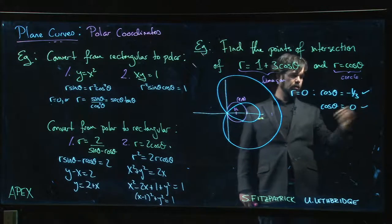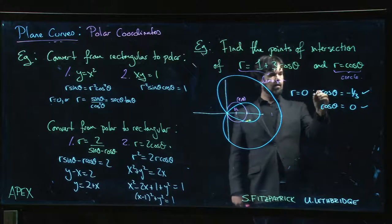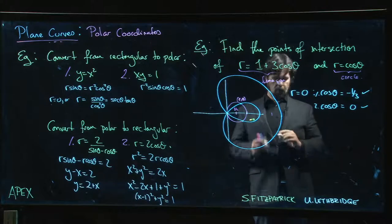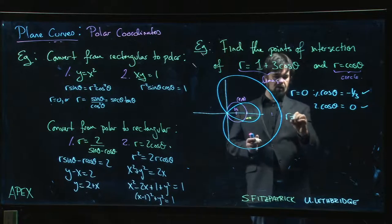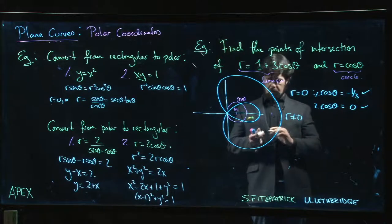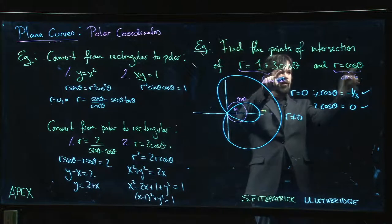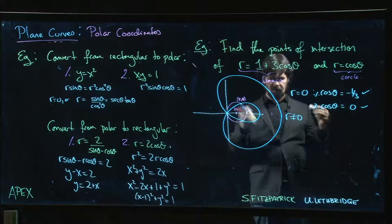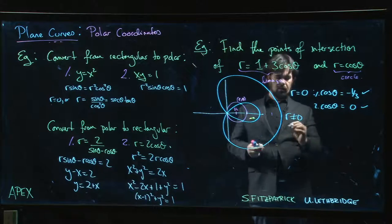Now if r is not equal to zero, we assume we can get the same r value from both for the same θ value—matching r and θ. So let's set 1 + 3cos θ equal to cos θ. That gives me 2cos θ equals...